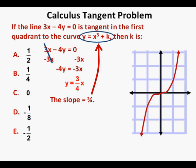So if we set this slope of 3/4 equal to the first derivative of y equals x cubed plus k, we'll be able to find the x value where the line 3x minus 4y equals 0 has the same slope as the curve. Using the power rule to differentiate, we have y prime equals 3x squared. The derivative of k — whatever k turns out to be — is of course 0, since the derivative of any constant value is 0.